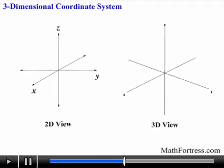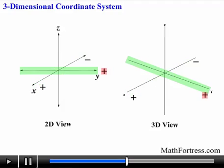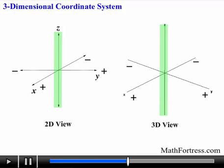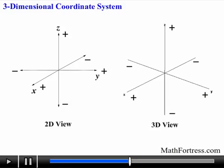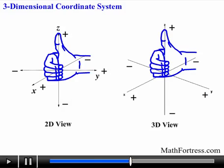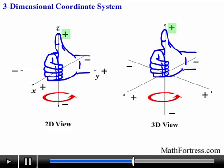Just like the previous coordinate systems, each axis contains positive values and negative values. On the x-axis, the positive values are located here and the negative values in the opposite direction. On the y-axis, the positive values are located here and the negative values in the opposite direction. On the z-axis, the positive values are located here and the negative values in the opposite direction. A way to remember the direction of the z-axis is by using the right-hand rule: if you curl the fingers of your right hand counterclockwise from the positive x-axis to the positive y-axis, then your thumb points towards the positive direction of the z-axis.